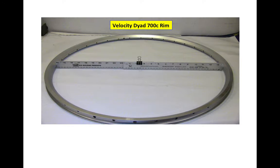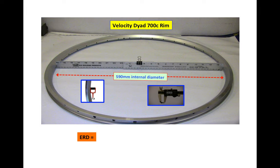Let's look at a specific example for a velocity dyad rim, a 700C rim, and we have a 590 millimeter internal diameter. So my ERD is equal to 590 plus two times 10.7 minus 7.0, and that equals 597.4 millimeters, which is the ERD of that rim.